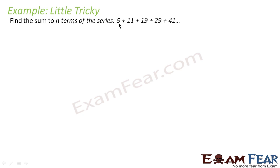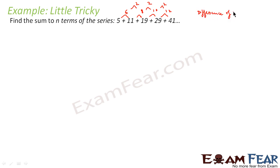We'll solve this example which is a little tricky. We are asked to find the sum of n terms of the series 5, 11, 19, 29, 41. If you see this, the differences are 6, 8, 10, 12 — not constant. But notice the difference is itself in AP. We find the difference of differences: 8−6=2, and it's 2 each time. So this is the scenario where the difference of terms is in AP. We will follow a standard approach for this case.